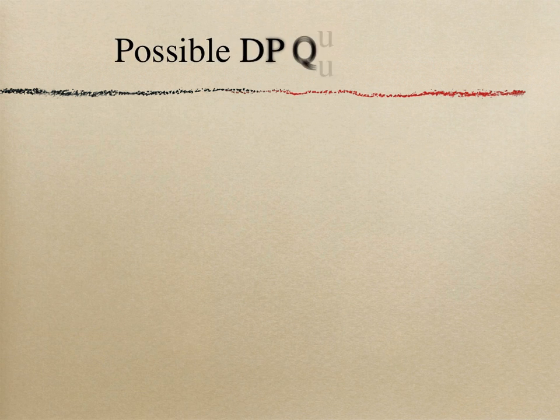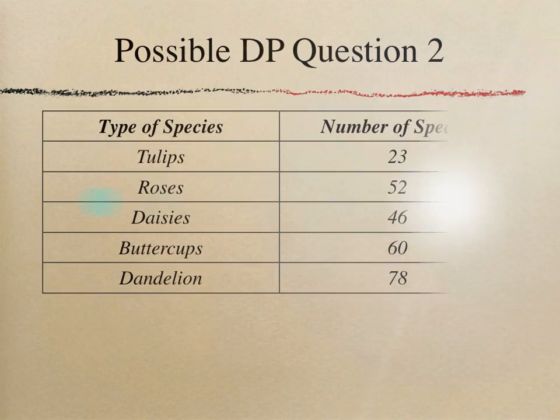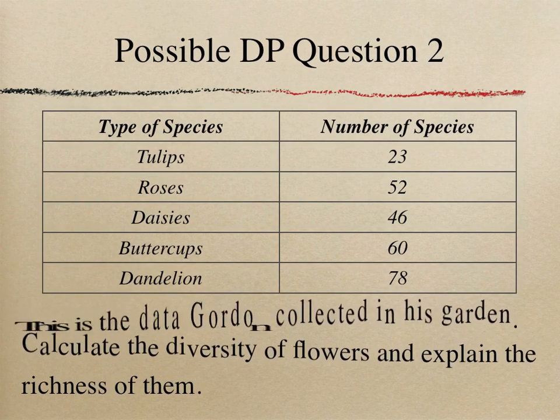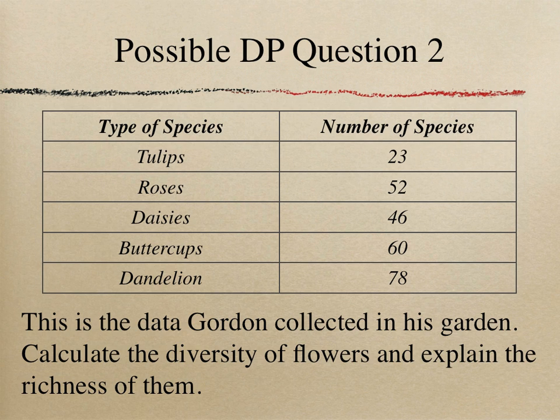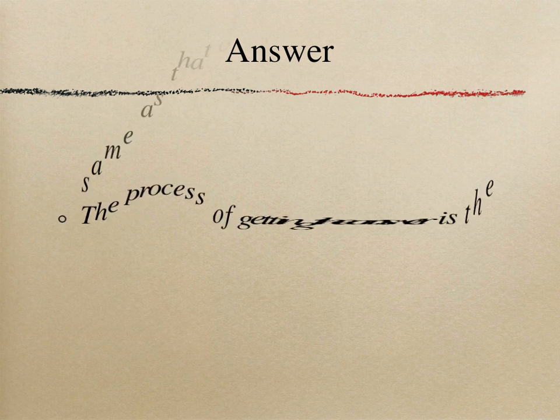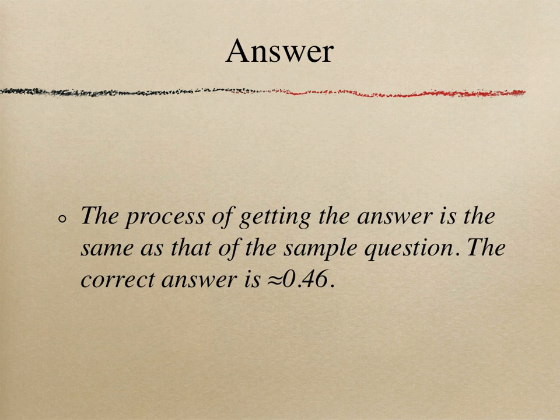Possible DP question 2: this is data that Golden collected in his garden. Calculate the diversity of flowers and explain the richness of them. The process of getting the answer is the same as the sample question. The answer is approximately 0.46. There are a large number of one species of flowers and five different types in this area. The species of flowers are pretty rich and diverse, as the result shows.